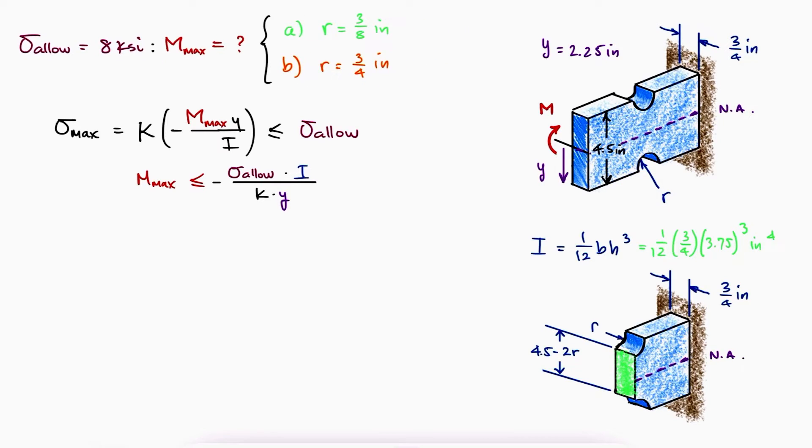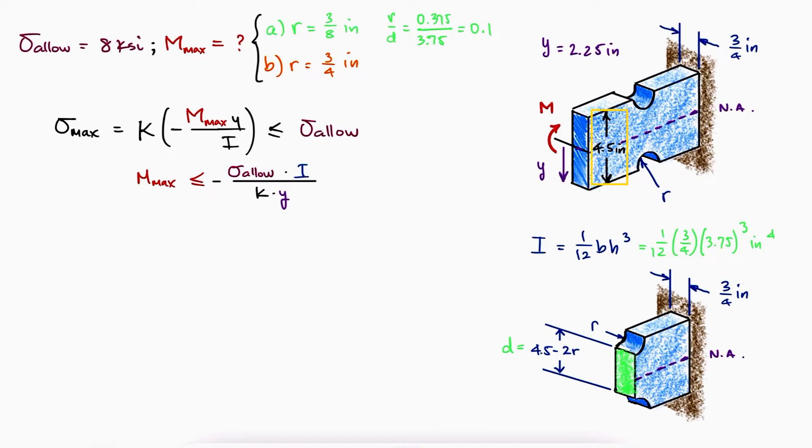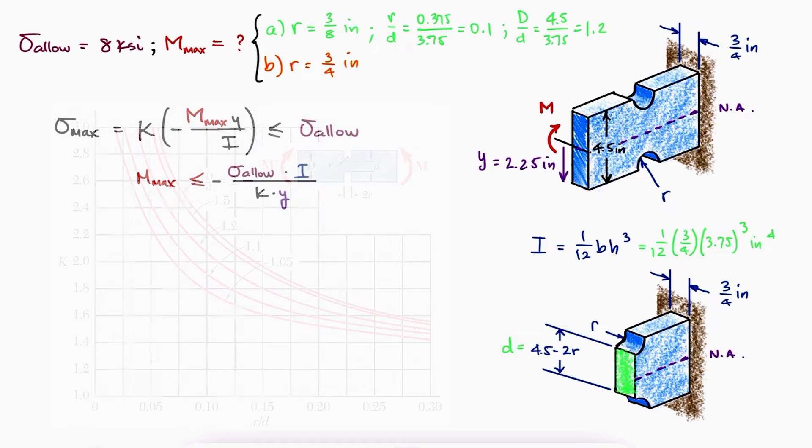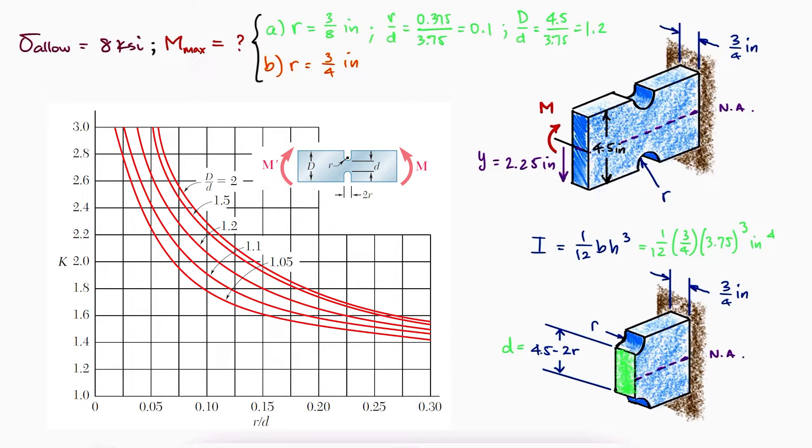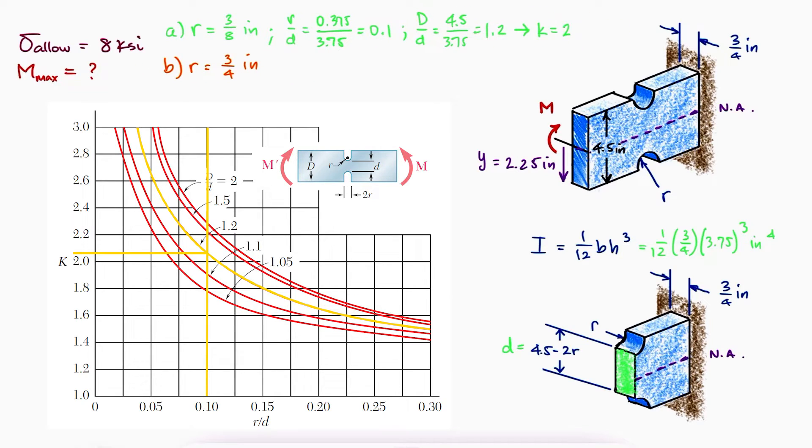The R over D ratio will be 0.1 and the capital D over lower case D ratio will be 1.2. Looking at the stress concentration factor chart for a flat bar with grooves under bending, we see that for an x-axis value of 0.1 and a D over D curve of 1.2, the K value is slightly below 2.1.